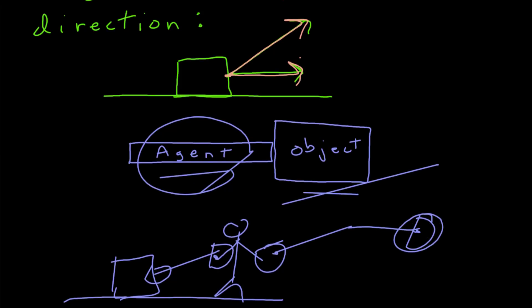Every force must have two things associated with it, two physical objects. There's an agent and an object. The agent is the one that's exerting the force, and the object is having the force applied to it. The key is that these must be physical objects.